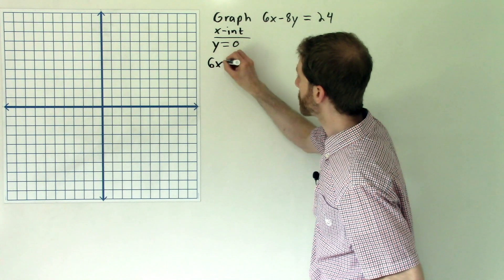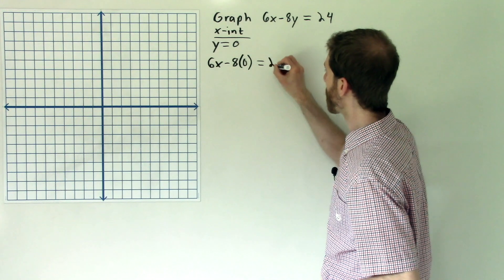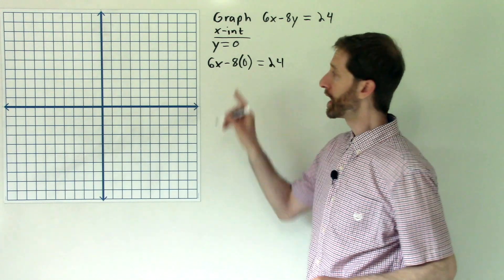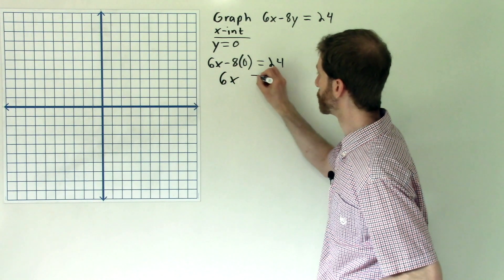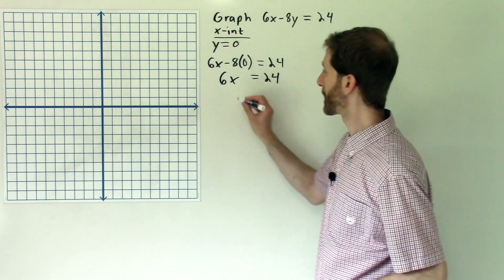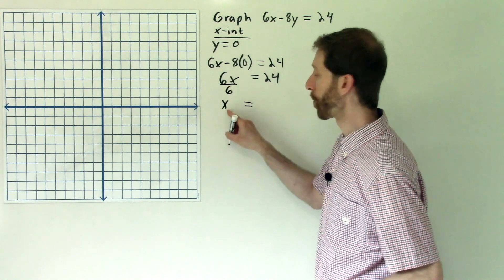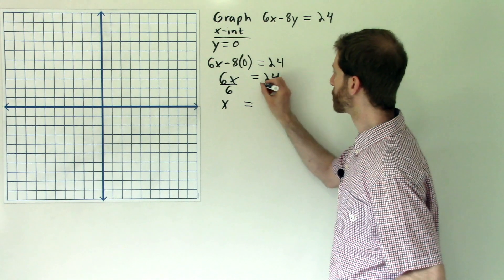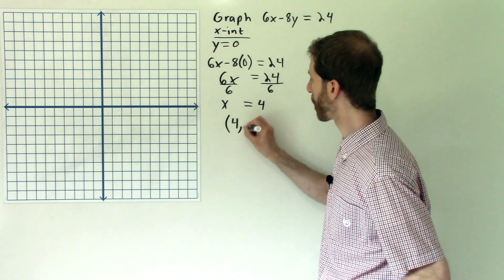I get 6x minus 8 times zero is equal to 24. And now I solve. 8 times zero is zero. That leaves us with 6x equal to 24. And now we just divide both sides by 6. If I divide 6 by 6, I get 1x remaining. 24 divided by 6 is 4. So I like to write that as a point, 4 comma 0.